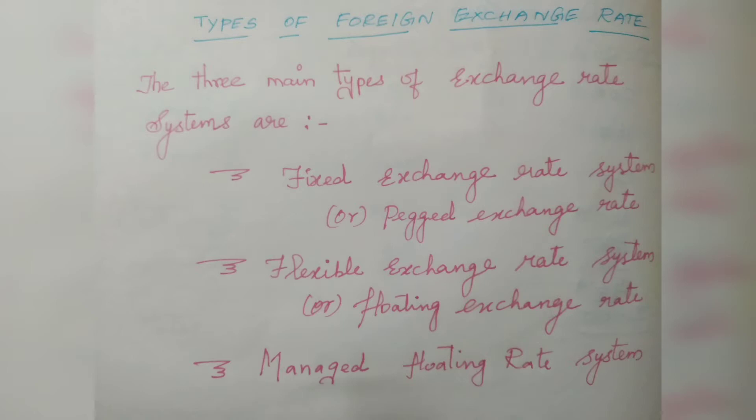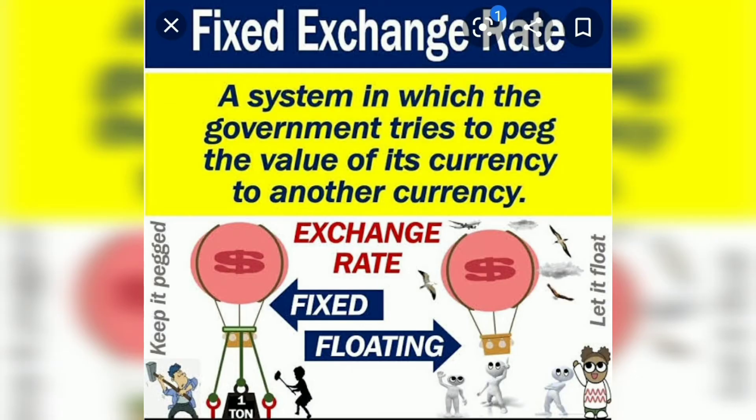Let's look at the fixed exchange rate system. The fixed exchange rate system refers to the system in which the exchange rate for a currency is fixed by the government. In the fixed exchange rate system, the government decides and fixes the value of the currency. That is the fixed exchange rate system.